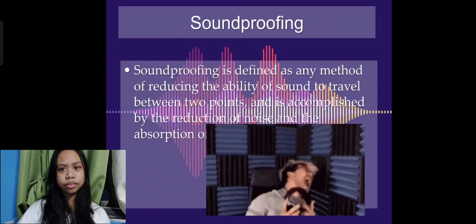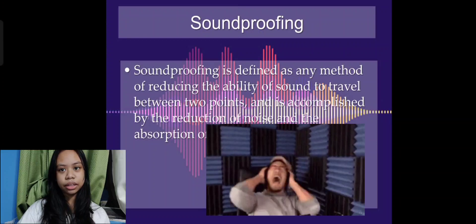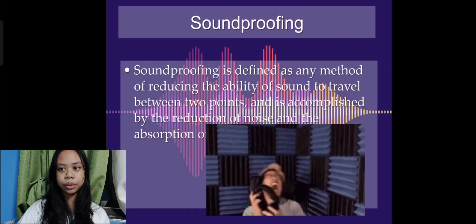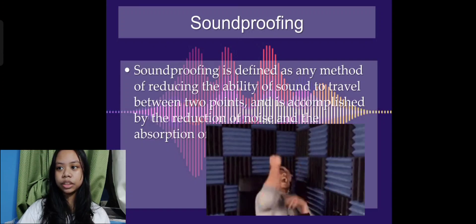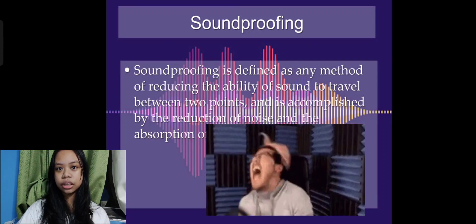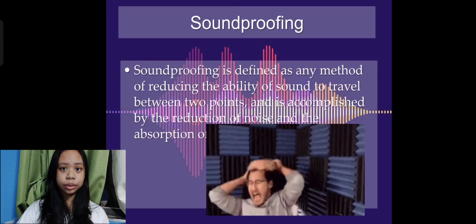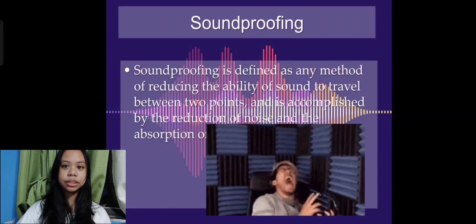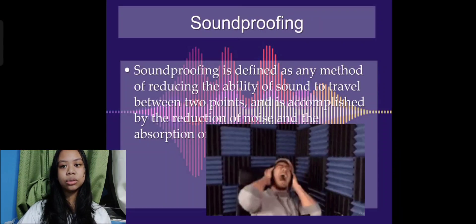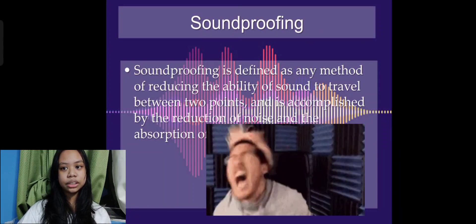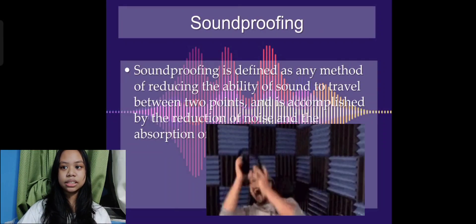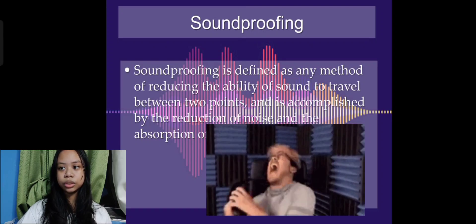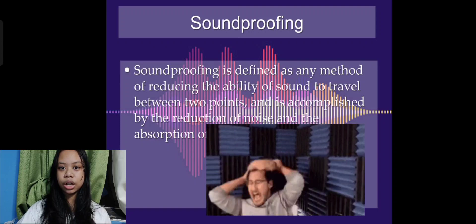Soundproofing is defined as any method of reducing the ability of sound to travel between two points and is accomplished by the reduction of noise and the absorption of noise. One of the simplest materials used in soundproofing is rubber where it uses its elastic properties to slow down and or absorb unwanted sound in a structure.